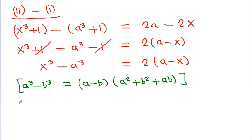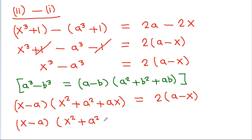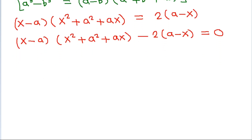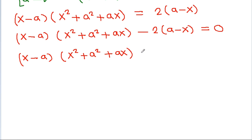x cubed minus a cubed will factor as (x minus a) times (x squared plus a squared plus ax), and this equals 2 times (a minus x). So (x minus a) times (x squared plus a squared plus ax) minus 2 times (a minus x) is equal to 0.